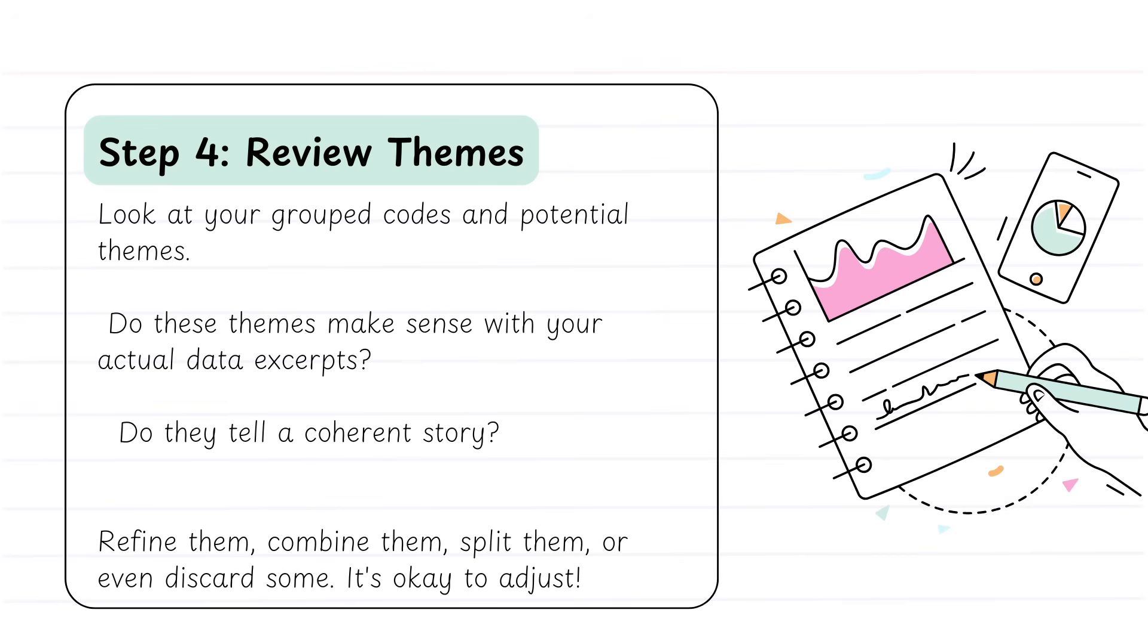Once you feel like you may have some themes that you've grouped, it's time to review them. Do those themes actually make sense in relation to your data? A common issue that some students have, and researchers in general, is they'll place data and codes under a theme because that's what they want their data to say, when their data doesn't actually say that. So do your themes make sense in relation to what your data is telling you? Can you start to group them? Is there a coherent story? Does one flow into the other?